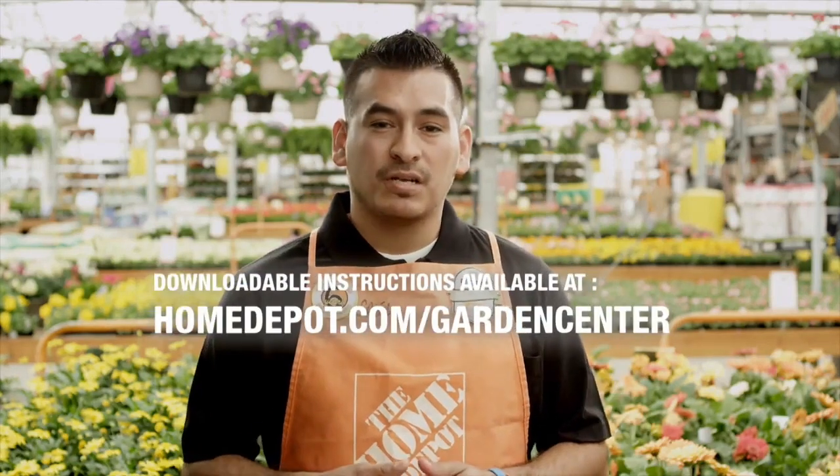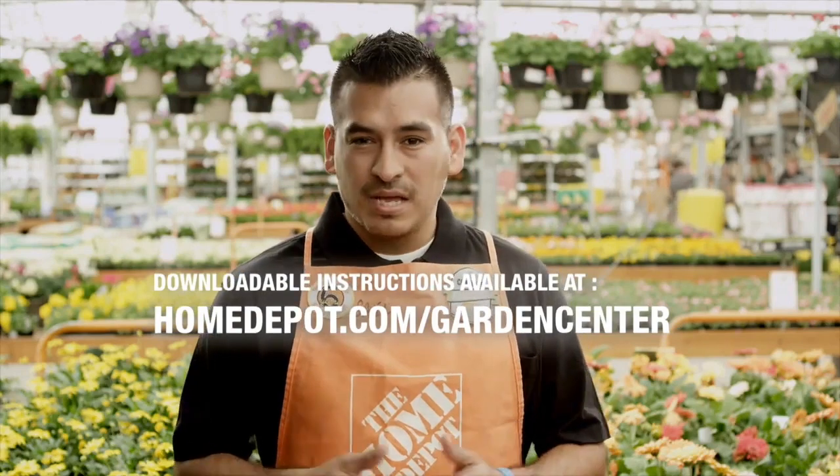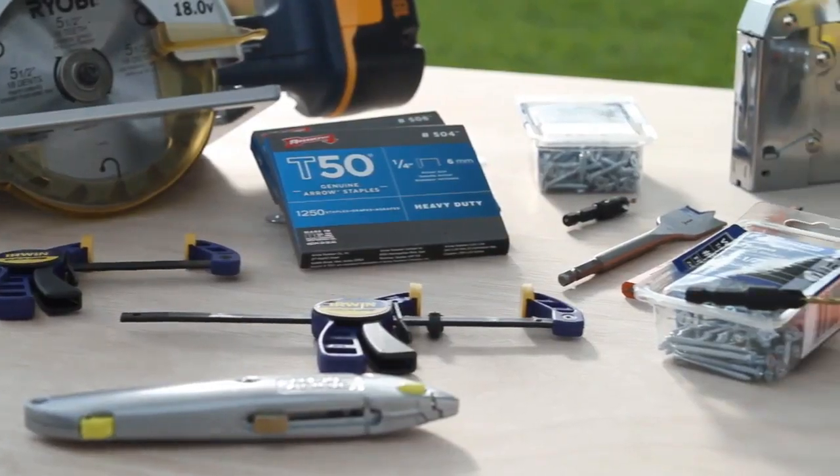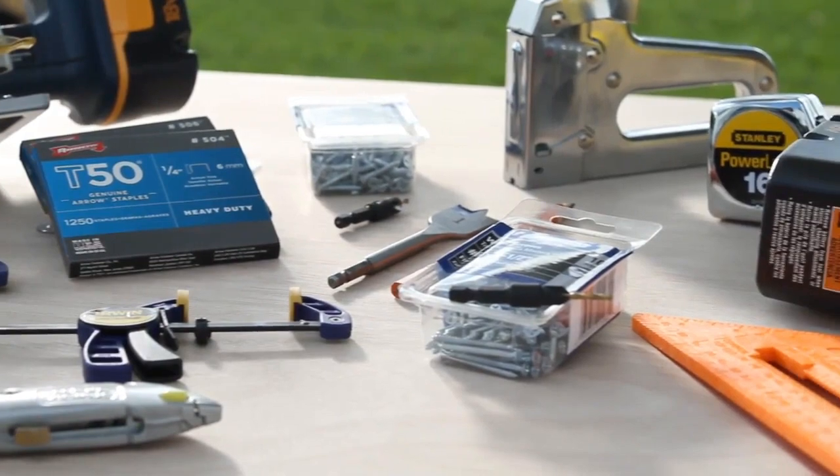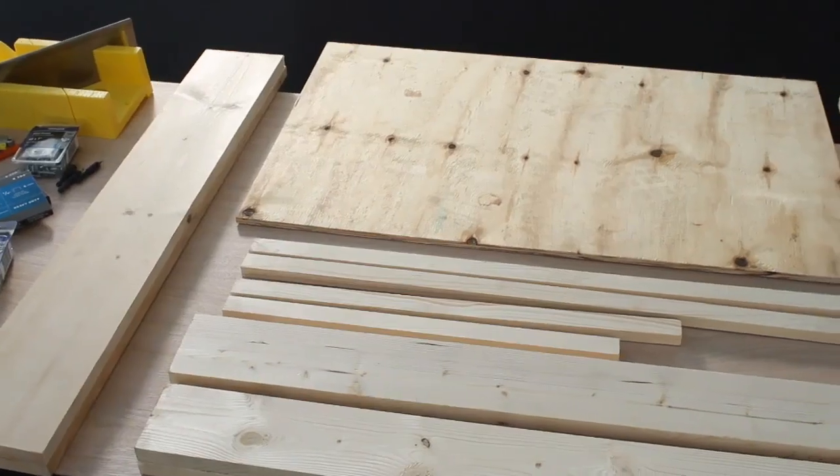There are several steps in this project, so you might want to watch this video once through and then use it as a reference as you build your garden. If you're good with measurements and a saw, you can create any size of vertical garden you want. We're going to show you how to make one that's 37 by 24 and a half inches.